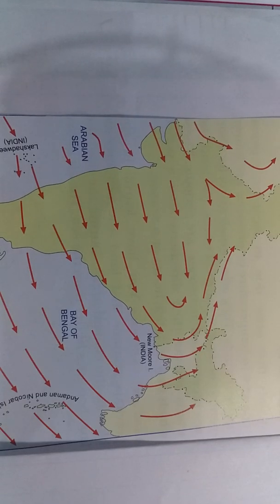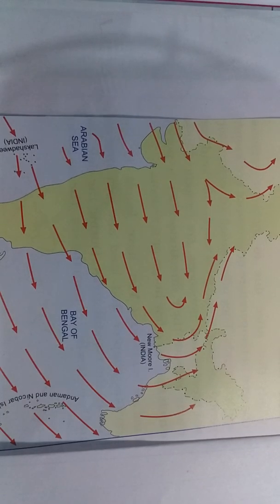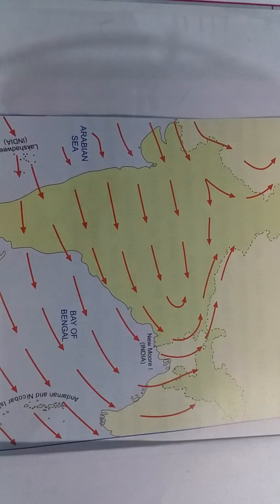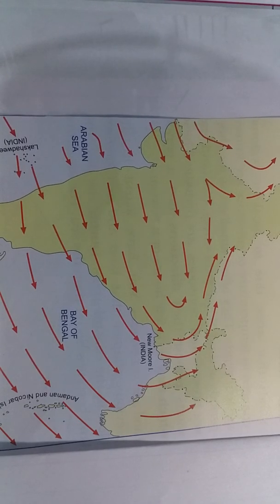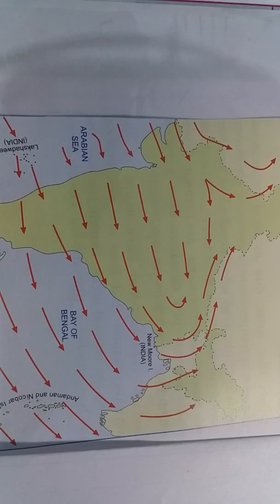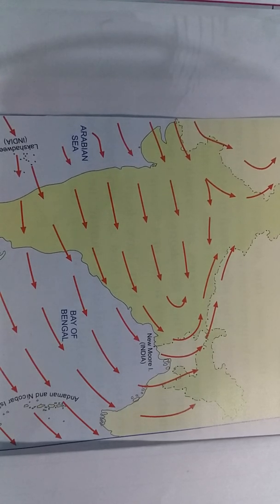In this module I will be explaining about the mechanism of monsoon. The term monsoon has been derived from the Arabic word meaning season. These are seasonal periodic winds that change their direction of flow with the change of season.